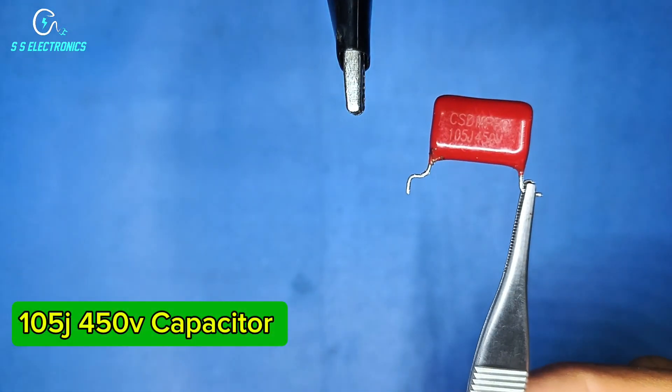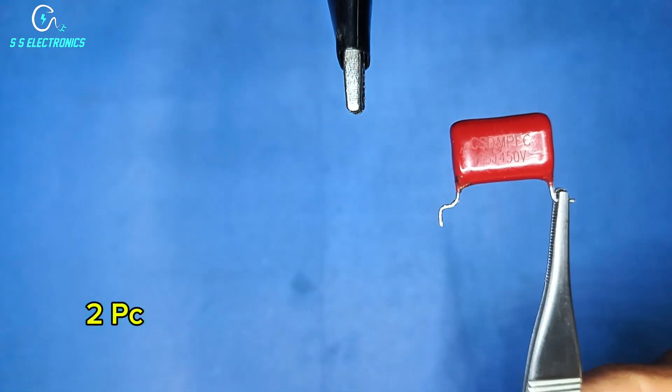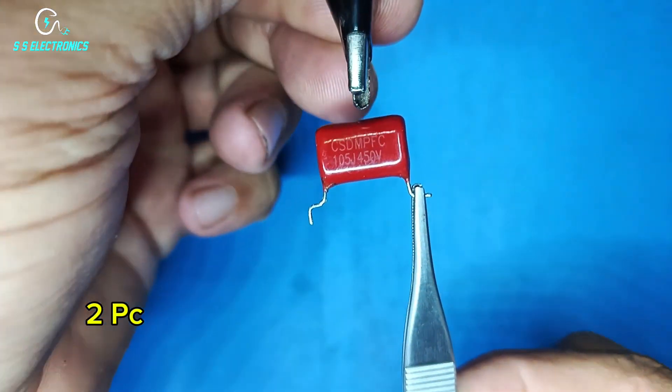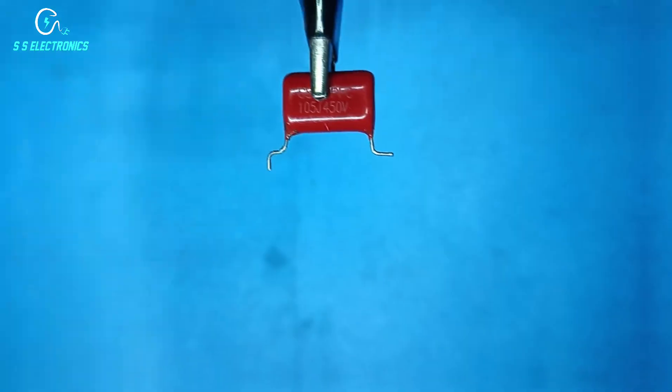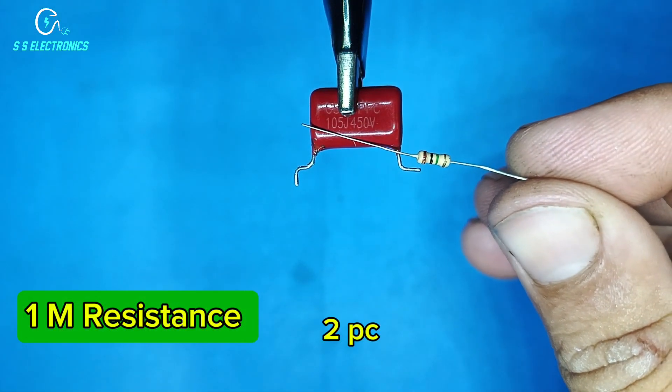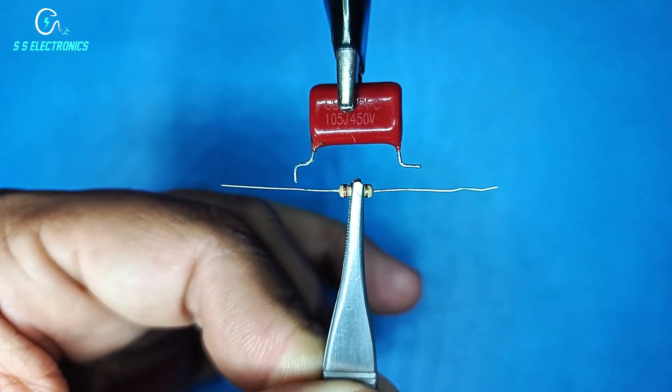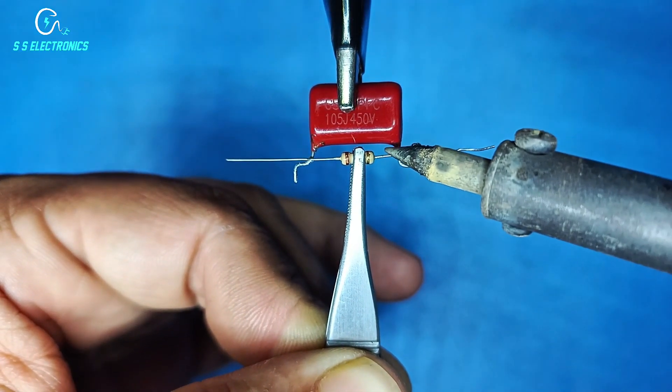105 J450 V capacitor. 1 M resistance. Resistance both sides connecting with capacitor.